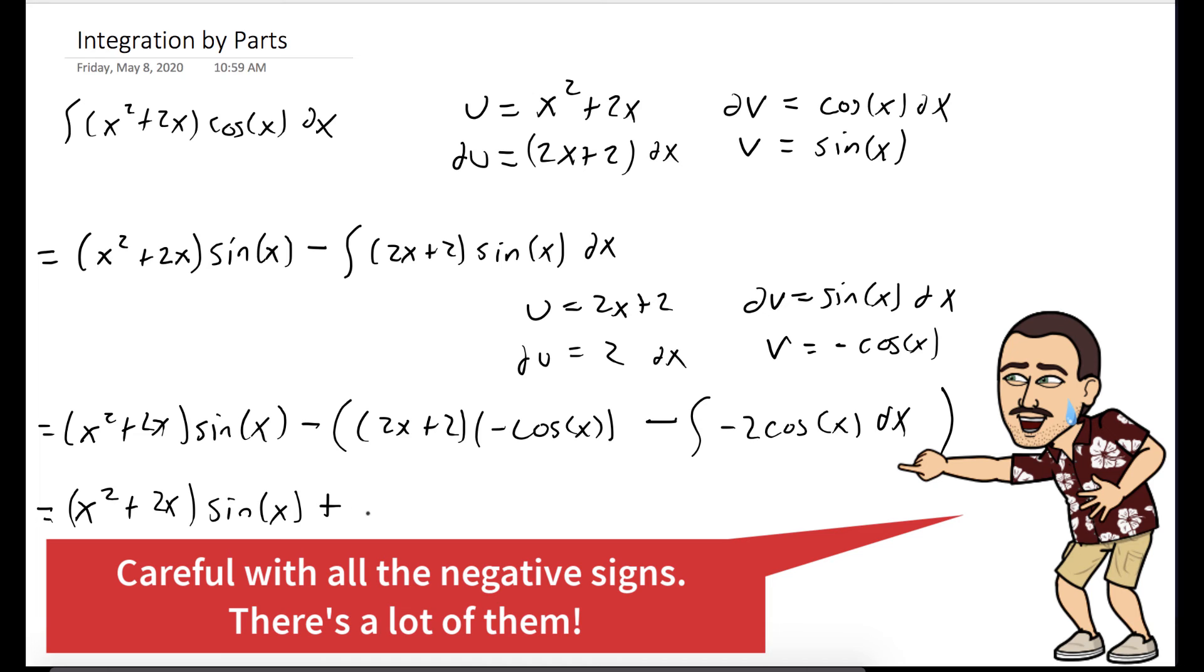So now we can just write out our answer. We have a lot of negatives, so we have to be careful that we count them correctly. But we get x squared plus 2x times sine of x plus 2x plus 2 times cosine of x minus 2 sine of x plus c.